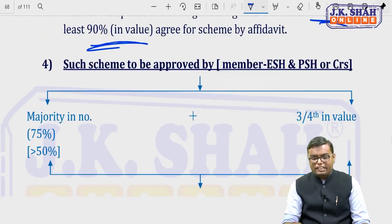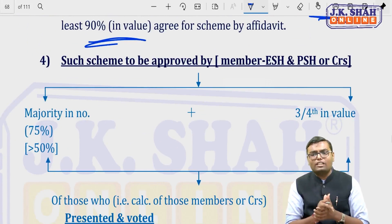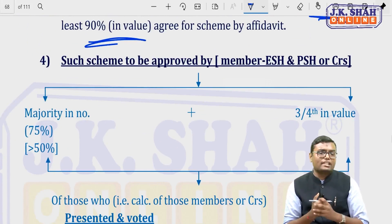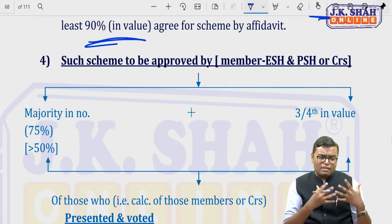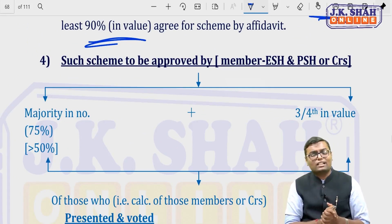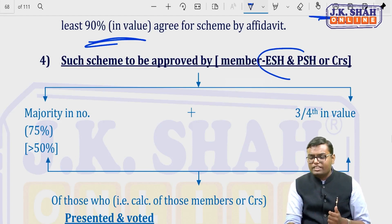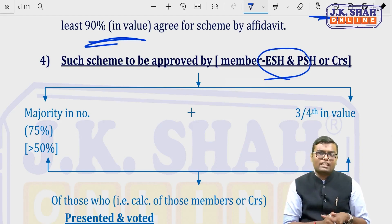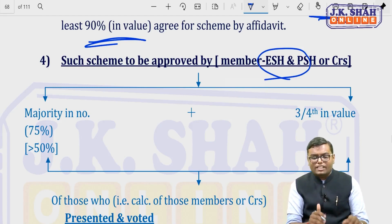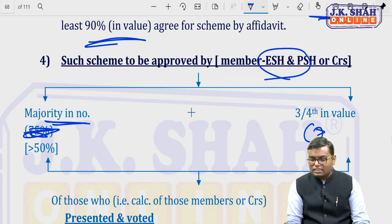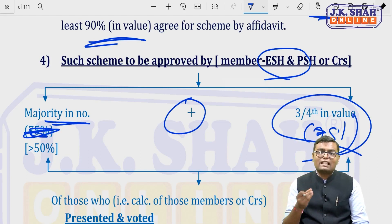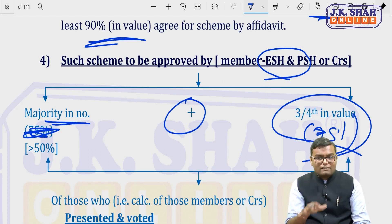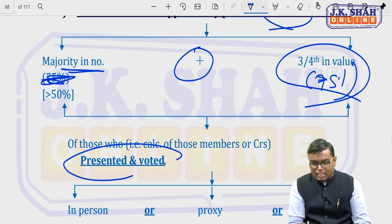If the meeting is not dispensed with, voting takes place. The scheme must be approved by a majority in number plus three-fourths (75%) in value among those present and voting. For members' meetings, both equity and preference shareholders are included. The thresholds are: more than 50% in numbers and more than 75% in value of those present and voting.